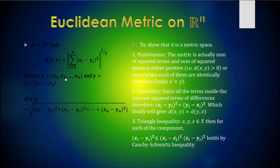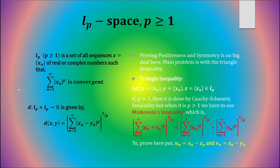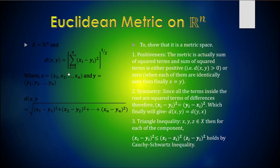Some people ask why we introduce this metric after studying real analysis. We are taught real analysis first so that we can feel this metric intuitively. Books like Rudin or Apostol take this metric first and then develop entire real analysis from it, which is a far more accurate approach.